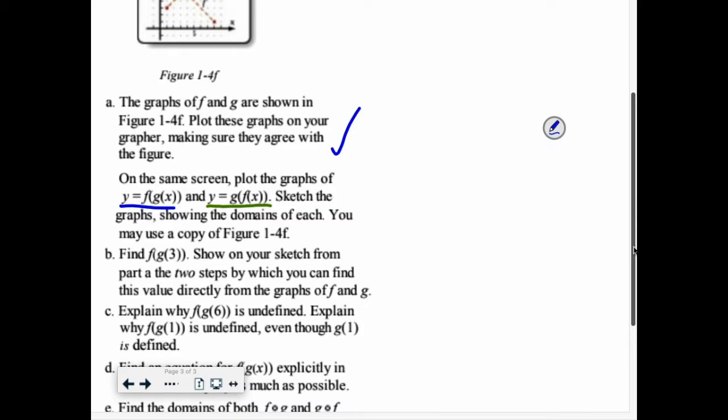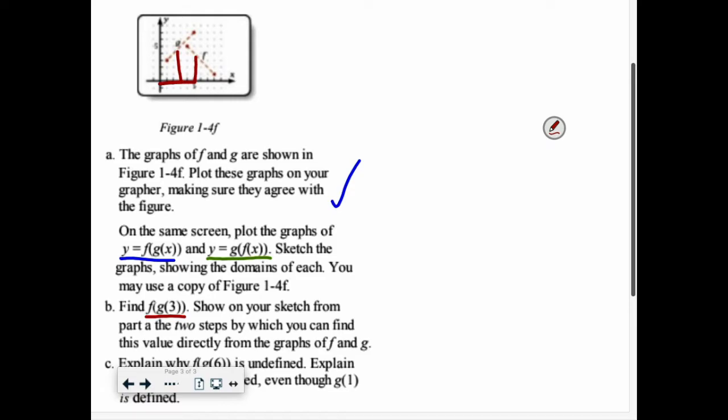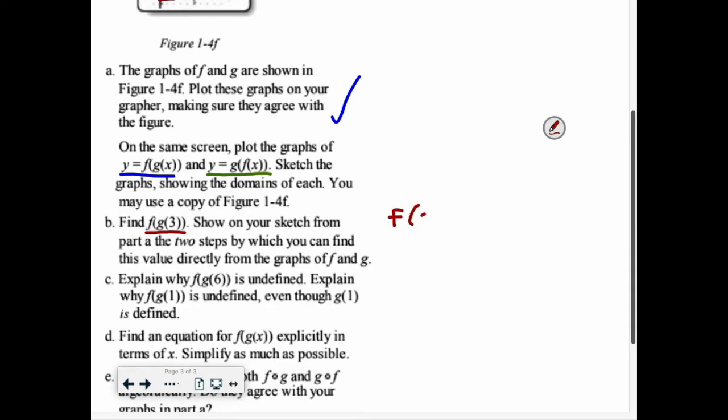Now, we want to find this. F of g(3). We want to show on your sketch from part A the two steps that you can do to find this. So our sketch, we can even just use this one. For g(3), I go 1, 2, 3, up to here, and that's about 5. Well, then that means I take my 5, and I go over to here, and up to here. That looks like it's about 3. And I found my two steps. So that means f(g(3)) equals about 3.